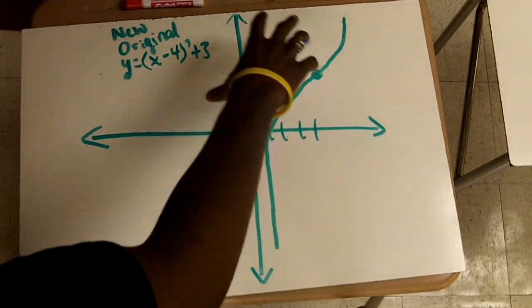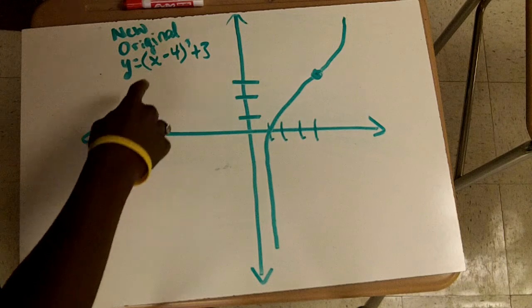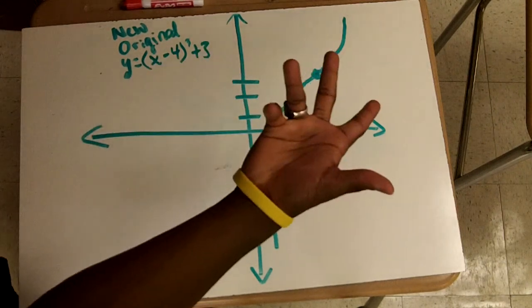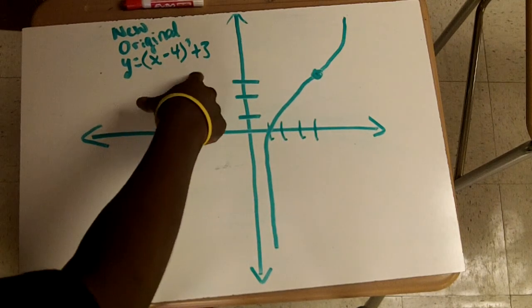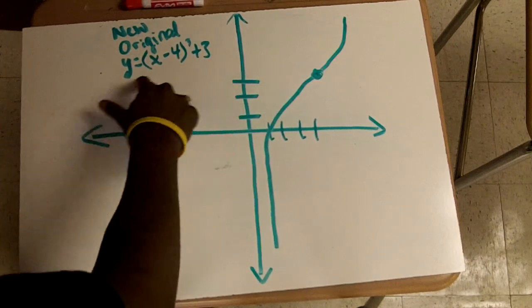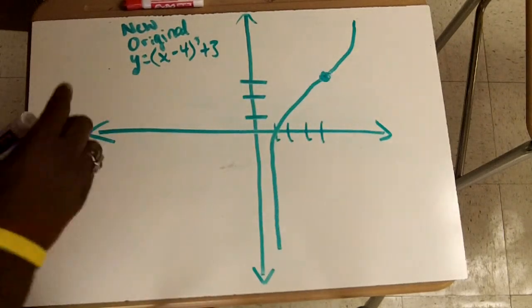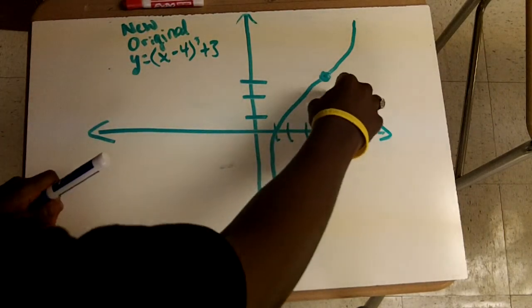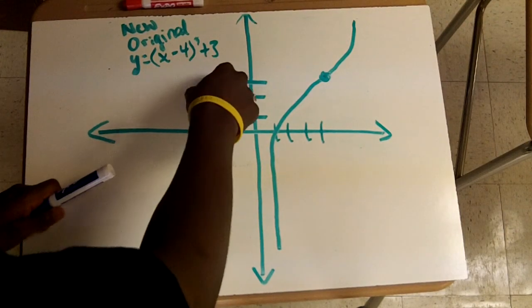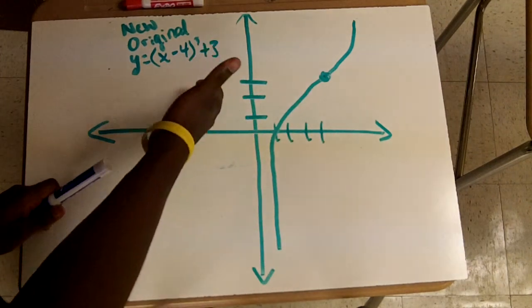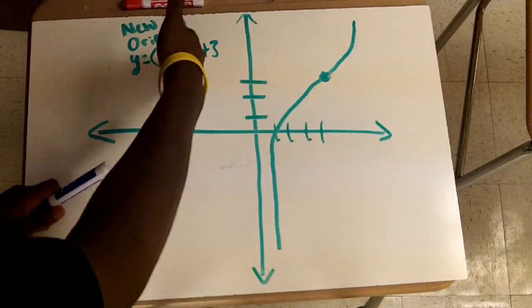And here you can see that my new original graph shows y equals x cubed, and I just took any number, so I took negative four plus three. You can set it as x minus four cubed plus three, and basically what you're saying is you're going up three and to the right four. Even though this says minus four, your graph is going to take you to the right four.